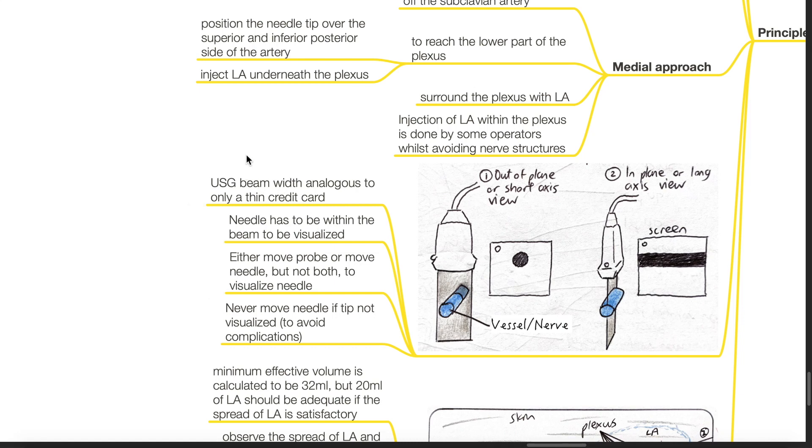The ultrasound beam width is analogous to only a thin credit card. The needle has to be within the beam to be visualized. Either move the probe or move the needle, but not both, to visualize the needle. Never move the needle if the tip is not visualized to avoid complications.